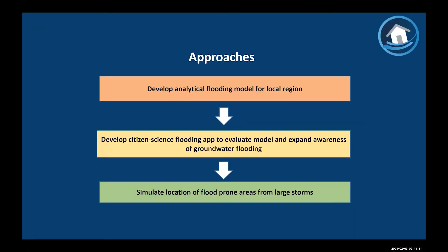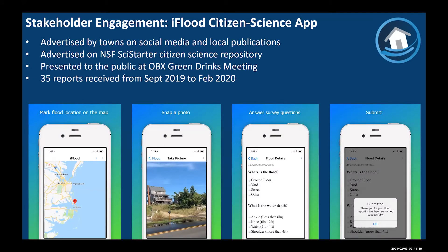With a working model, we wanted to test how well it predicts flooding across the Outer Banks. We worked with the town offices in Duck and Nags Head to develop a citizen science app called iFlood. The app enables users in the community to send us photos when they see flooding, along with a location, a picture, and answers to survey questions. Between September 2019 and February 2020 we received 35 reports through the app, aided by advertising on social media, a citizen science data repository, and an Outer Banks Sierra Club chapter meeting.